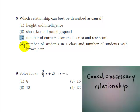And just to finish up and comment, number of students in class and number of students with brown hair, well, you can have large classes where everyone has brown hair or large classes where no one has brown hair, so not necessarily related. Three is the best answer choice.